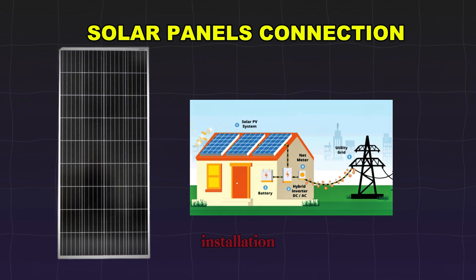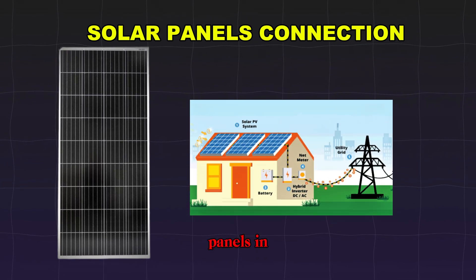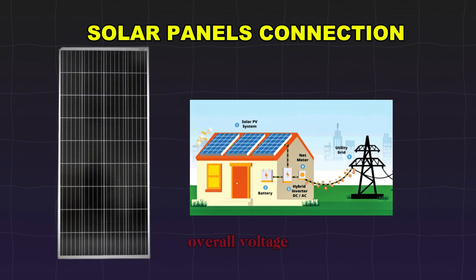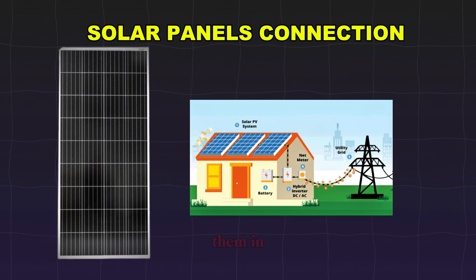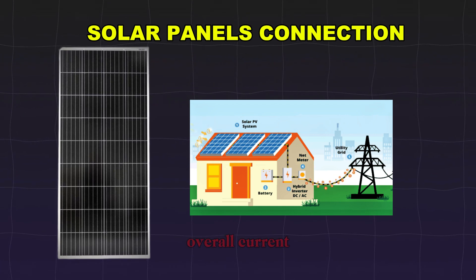In a solar inverter installation, connecting solar panels in series increases the overall voltage, while connecting them in parallel increases the overall current.